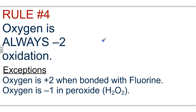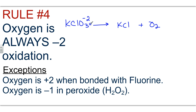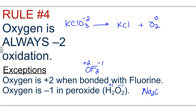Rule four: oxygen is always negative two, with a few exceptions. For example, oxygen assigned a negative two charge in a compound, but if oxygen is a diatomic all by itself, it's neutral and gets a zero. The two exceptions are: first, if oxygen is bonded to fluorine — fluorine has to be negative one, so to balance, oxygen must be plus two. Second, in a peroxide like H₂O₂, hydrogen must be plus one and because there are two oxygens, each oxygen can only be minus one. The same applies to sodium peroxide — sodium is plus one, oxygen is minus one.